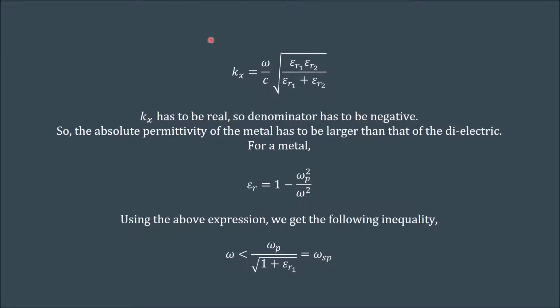Now let us analyze the dispersion relation that we just received for surface plasmons. In the earlier slides, we got this relation for kx. Since the surface plasmon is propagating in the x direction, kx has to be real. Also we saw that exactly one of the relative permittivities, that is the one corresponding to the metal, has to be negative which makes the numerator in the square root negative. This implies that for kx to be real, the denominator also has to be negative. What this says is that the absolute permittivity of the metal has to be larger than the absolute permittivity of the dielectric that we're using.